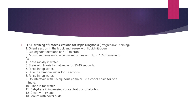For H&E staining of frozen sections for rapid diagnosis — progressive staining — the procedure is as follows: first, orient the section in the block and freeze with liquid nitrogen; second, cut into cryostat sections at 5 to 10 microns; third, mount sections on albumin-coated slides and dip in 10% formalin to fix; fourth, rinse with tap water and stain with Harris hematoxylin for 30 to 45 seconds; fifth, rinse with tap water followed by blueing in ammonia water for five seconds.